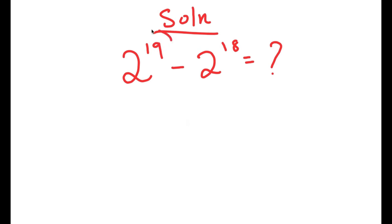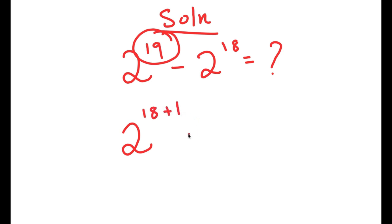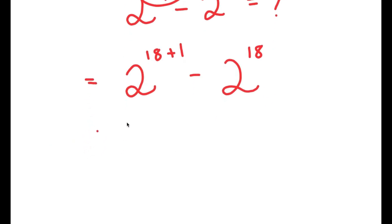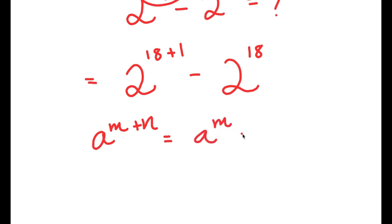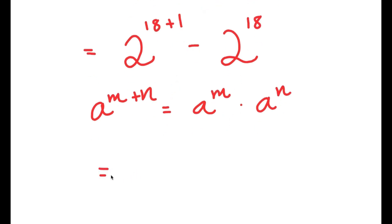To start off, I'm going to rewrite 19 as 18 plus 1. So I get 2 to the power of 18 plus 1, minus 2 to the power of 18. If I have something in the form a to the power of m plus n, this is equal to a to the power of m times a to the power of n. So 2 to the power of 18 plus 1 is equal to 2 to the power of 18 times 2 to the power of 1.